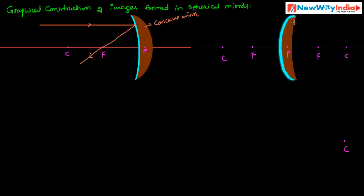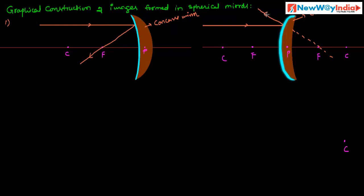In the case of a convex mirror, a ray of light traveling parallel to the principal axis and incident on the convex mirror — after reflection, it will appear to be coming from the principal focus of the convex mirror. So this is Rule 1: for a concave mirror, the reflected ray passes through the principal focus; for a convex mirror, it appears to come from the principal focus.